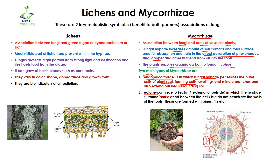The second type is ectomycorrhiza — ecto means external or outside. In this association, the fungal hyphae surround and extend between the cells but do not penetrate the walls of the roots. You can see that in ectomycorrhiza a layer forms outside the roots but they have not penetrated deep inside, unlike endomycorrhiza. They form pines and furs. The whitish part in the diagram is actually the mycorrhiza association, which helps improve the growth of plants.